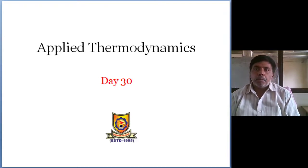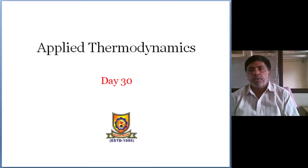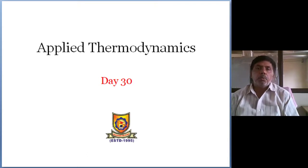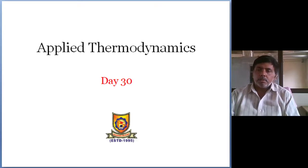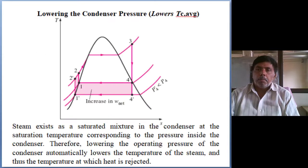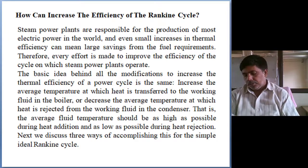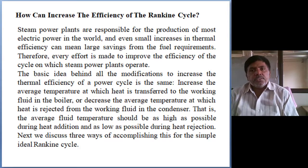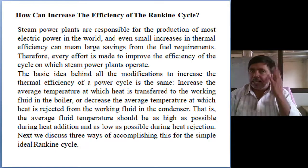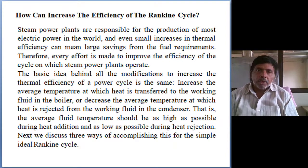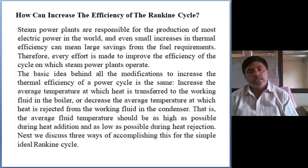If in the ideal Rankine cycle I am applying the same pressure and temperature limits, the efficiency we are getting is 25 percent. In the real Rankine cycle, if you consider the losses of turbine and compressor, the efficiency is reduced to 22.5 percent. So we understand from this analysis that the maximum efficiency we can achieve with a simple Rankine cycle is 25 or 30 percent — not more than that.